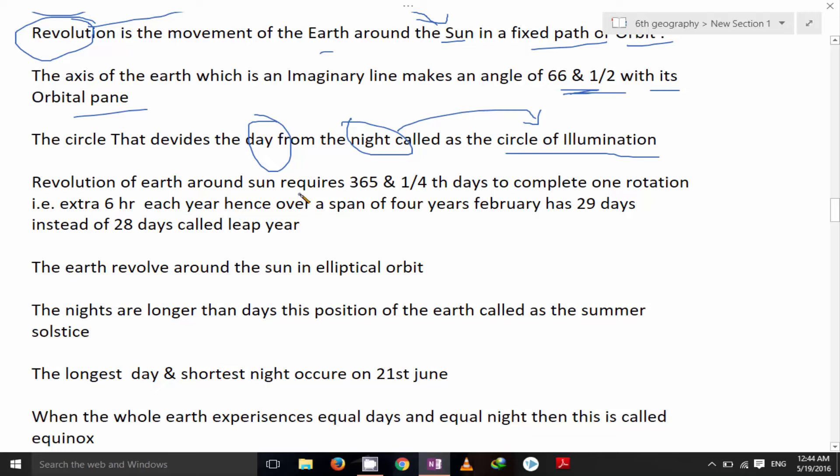Revolution of the earth around the sun requires 365 and one fourth days to complete one rotation. That is extra six hours each year because we consider only 365 days. So extra six hours each year, when we consider that after four years then it will be 24 hours extra. That's why in the month of February there is a leap year of 29 days instead of 28 days. We call it as a leap year.